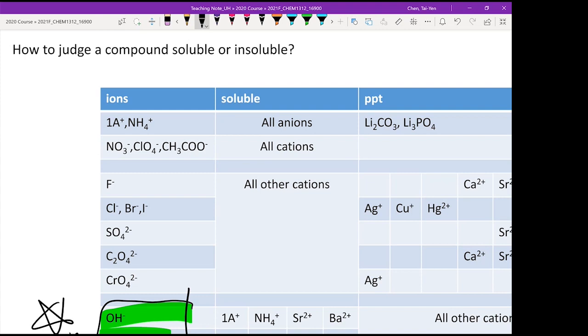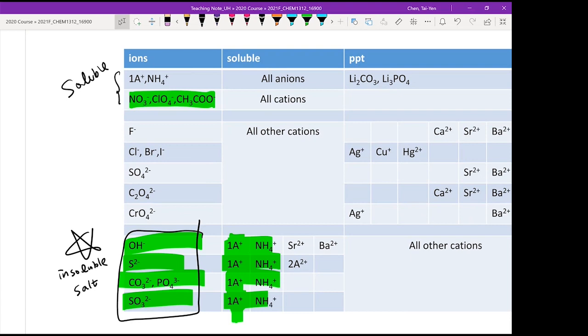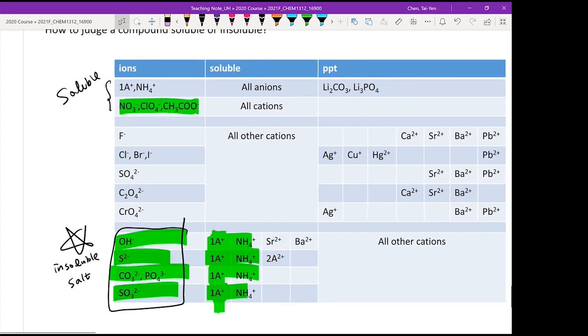The top two rows always soluble, the bottom four rows are always insoluble. In between there are actually a few specific cases. So if you can memorize this special case, okay: the F- minus, Cl- minus, Br- minus, I- minus.